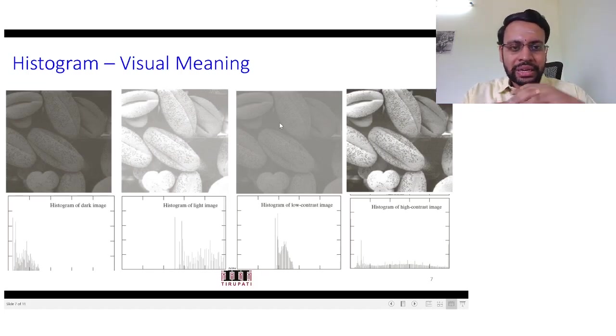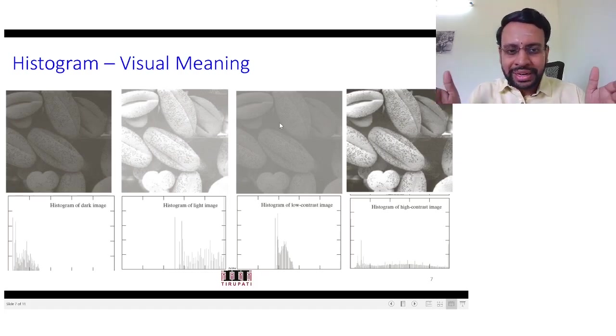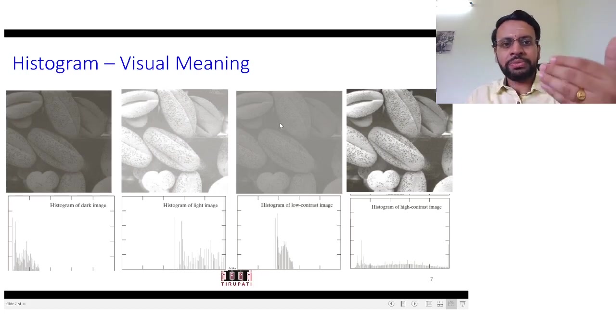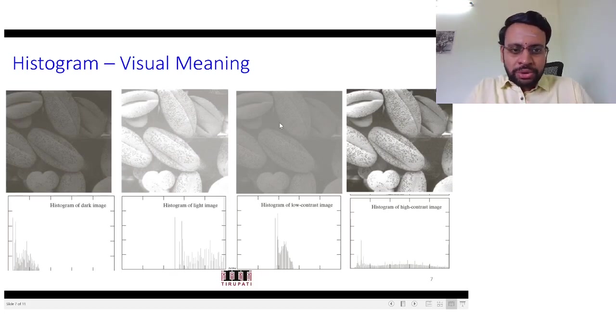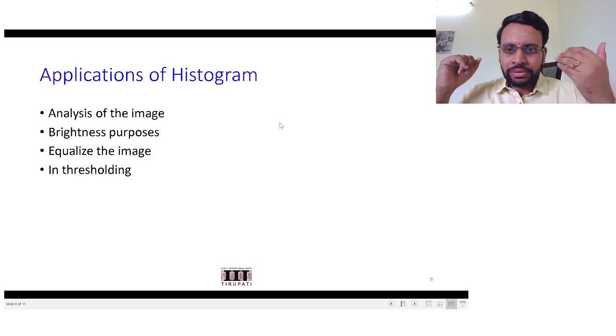From this you could already guess that in order to have a good high contrast image, what you would expect is to have an even or roughly even distribution of intensities in the histogram. So that's what in the next class and the class after that we will be looking at: methods that operate on the histogram of a given image and redistribute these intensities in such a way that you could get a better contrast image, or in other words, an enhanced version of the original image.